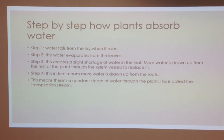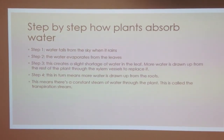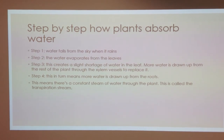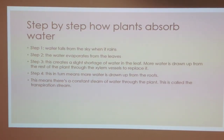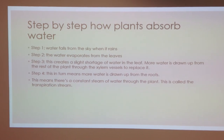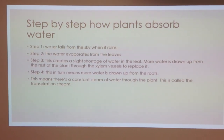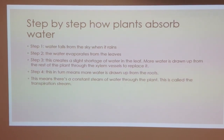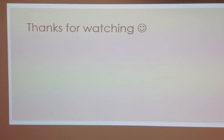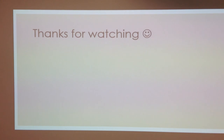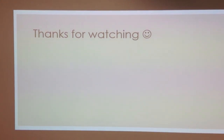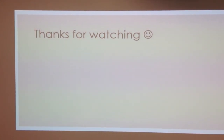In turn, this means more water is drawn up from the roots. This means there is a constant stream of water through the plant. This is called the transpiration stream. And that's all you need to know about transportation of water in a plant. We hope you enjoyed it and learnt something.